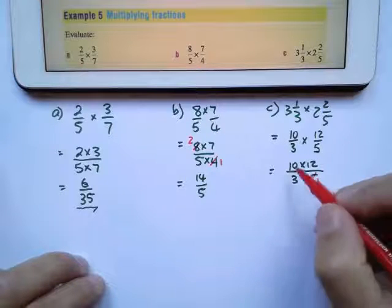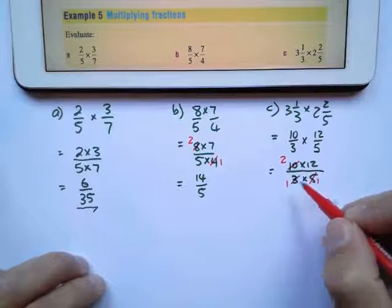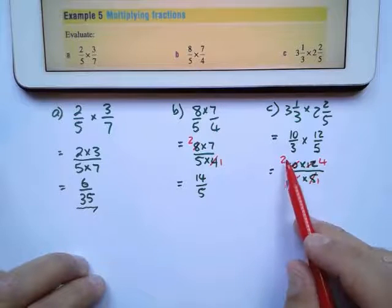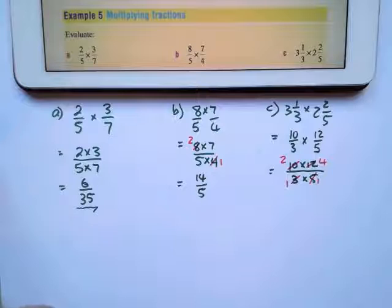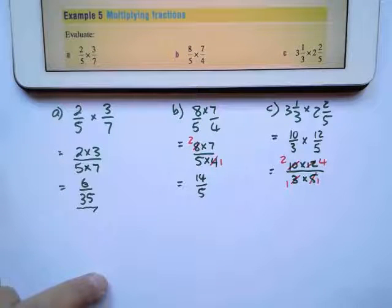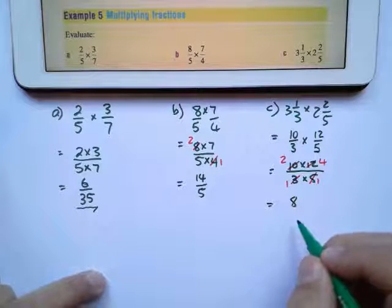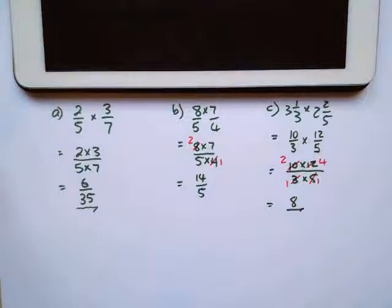5 divided into itself once, and 5 divided into 10 twice. 3 divided into itself once, and into 12, 4 times. I can't simplify 2 and 4 because both of them are above the line. So my answer will be 2 times 4 is 8, 1 times 1 is 1. I usually don't write the 1, so my answer will be just 8.